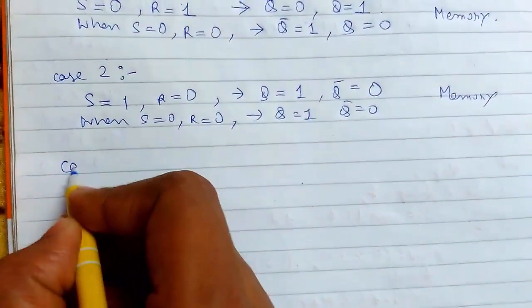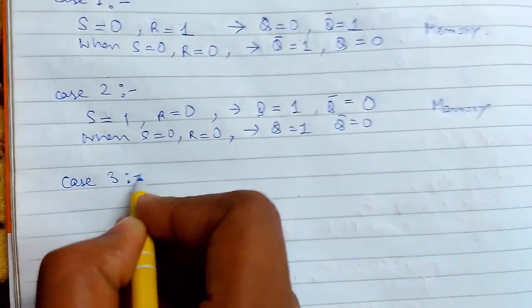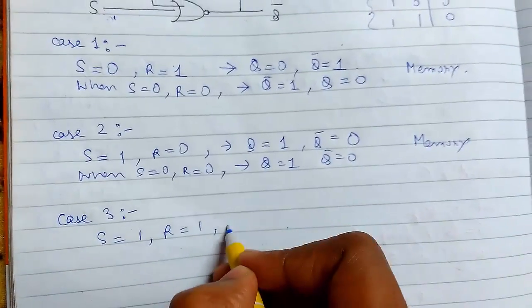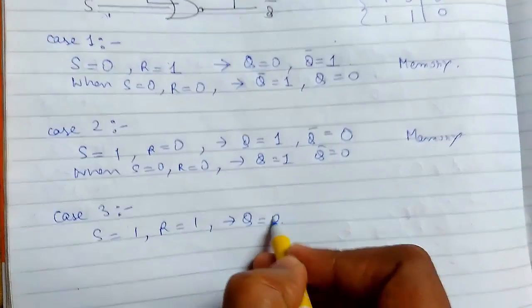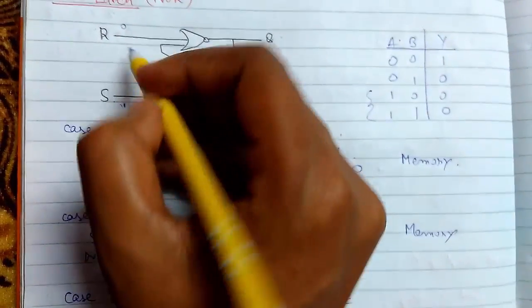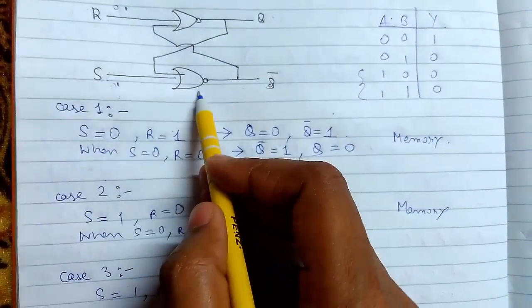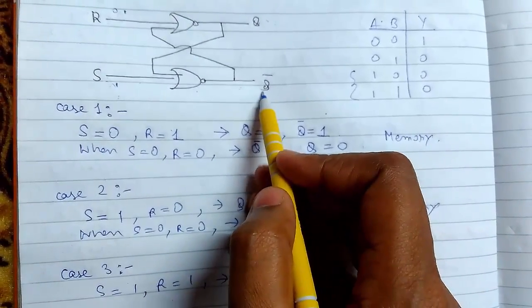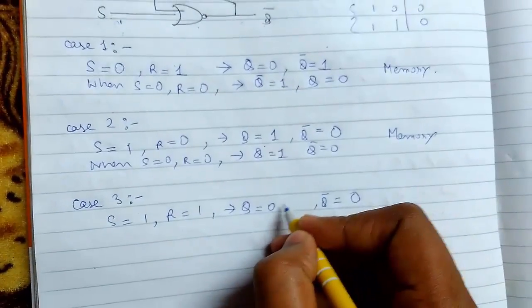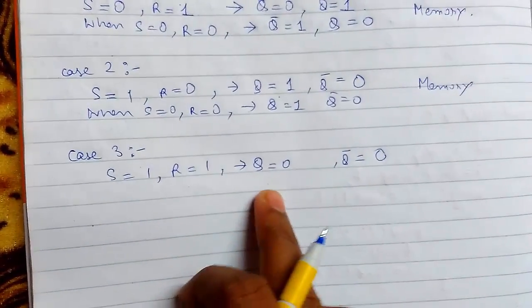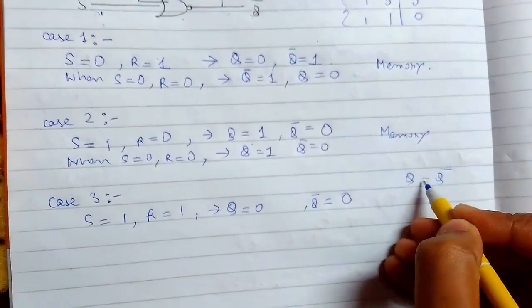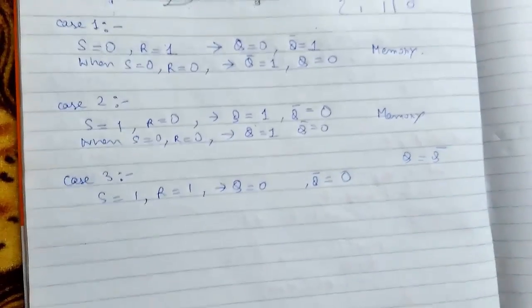Now case 3, the possible case will be S=1 and R=1, so let us see what is our output. If both are 1, so 1 and 1, 1 will make it deactivated. So this will be 0 and 0, 1 is again 0. So let me explain you, this is not at all possible, because Q cannot be equal to Q bar, they must be opposite to each other for every case.